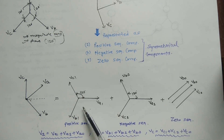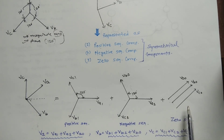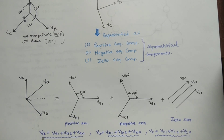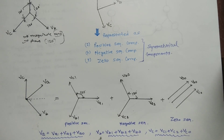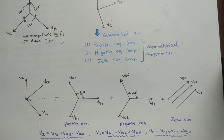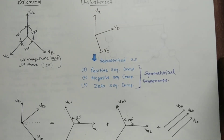The positive sequence component is indicated by subscript 1, negative by subscript 2, and zero by subscript 0. The unbalanced phasor voltage VA is represented as VA1 plus VA2 plus VA0. The unbalanced phasor voltage VB is equal to VB1 plus VB2 plus VB0, and VC is equal to VC1 plus VC2 plus VC0.